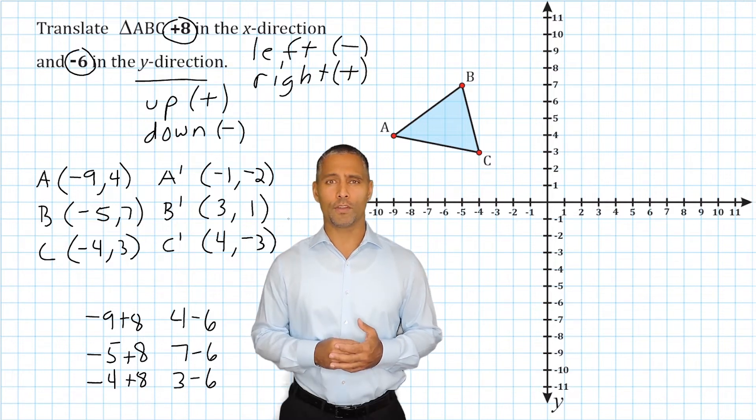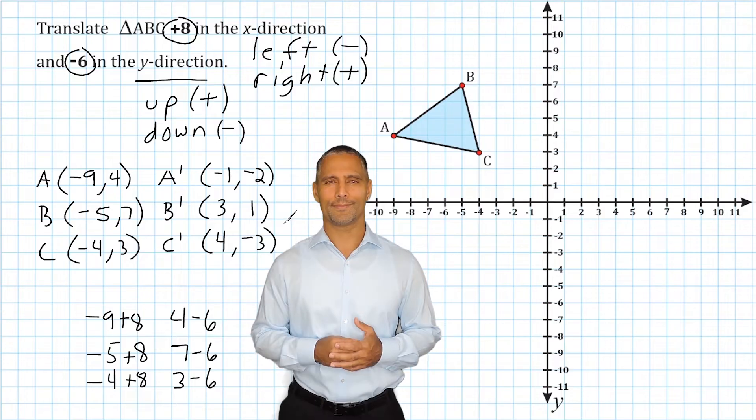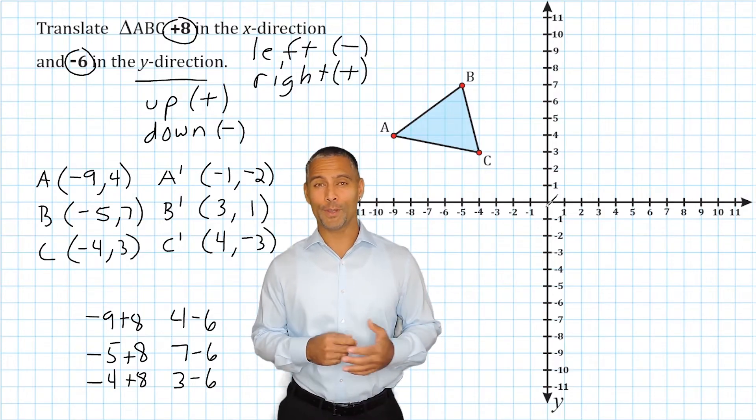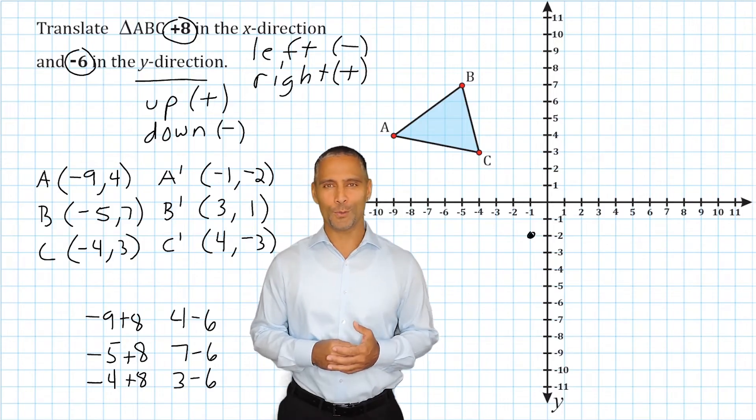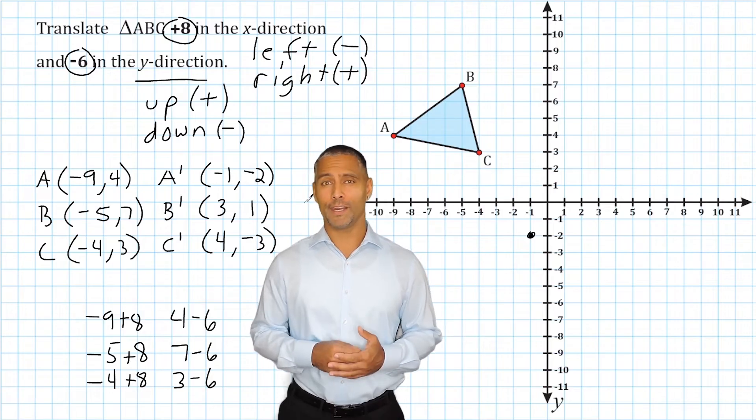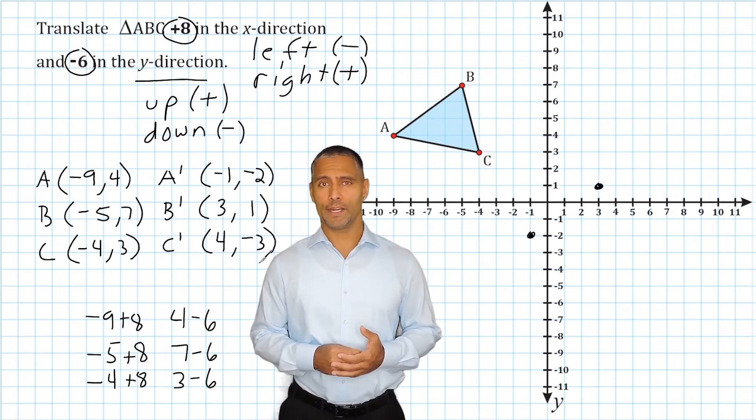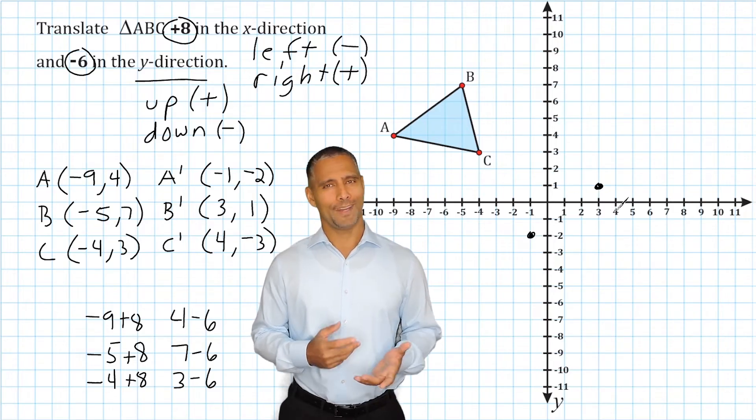Now that we have the new coordinates of our translated points, let's go ahead and graph them. Point A is going to be located at negative 1, negative 2. Point B is going to be located at positive 3, positive 1, and point C will be located at positive 4, negative 3.